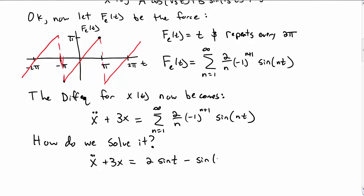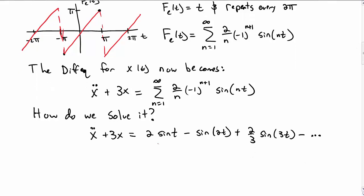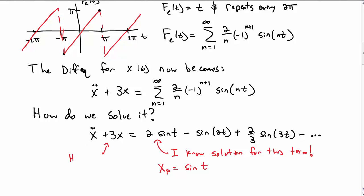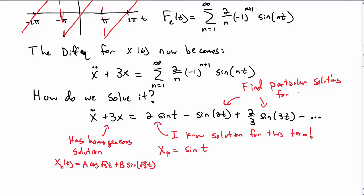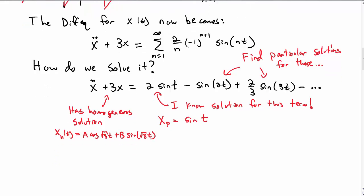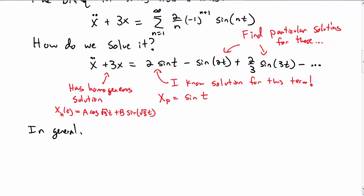Writing out the right-hand side, the first term is 2 sine of t, then minus sine of 2t, plus 2/3 sine of 3t, and so on. I already know the particular solution for just the first term — that's sine of t, as derived earlier. The homogeneous solution remains the same. So what I need to do is find a particular solution for each of the additional terms, then add all those particular solutions to the homogeneous solution to get the full solution.